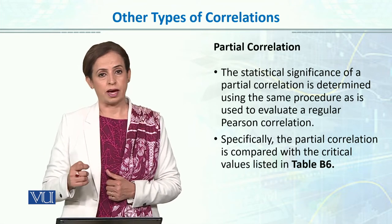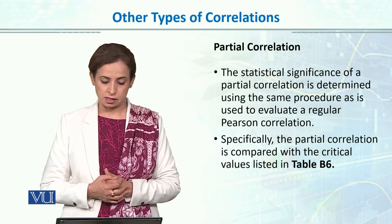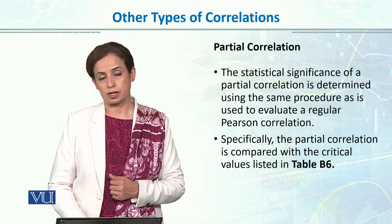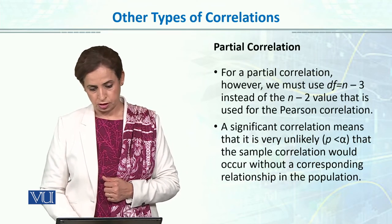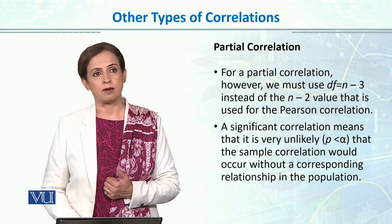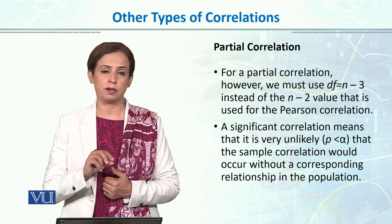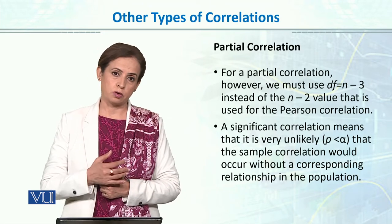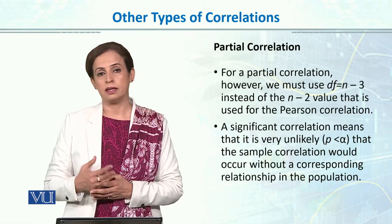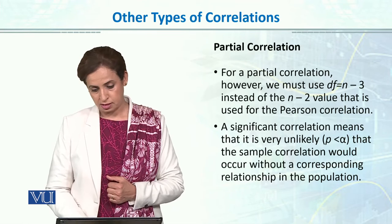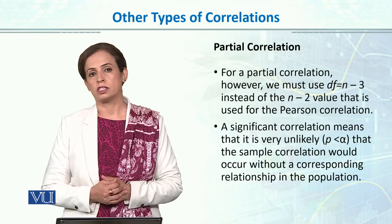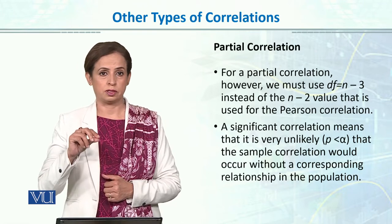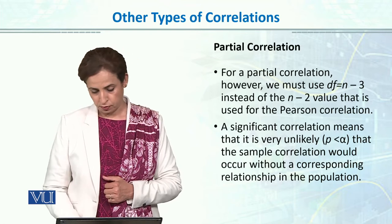If our p-value is smaller than the table value, then we say the result is significant. We use the same table — table B6 in the textbook — that we use for Pearson product-moment correlation. For Pearson correlation with two variables, the degrees of freedom is n-2, but in partial correlation, because we have a third variable, we calculate the degrees of freedom as n-3. A significant correlation means your two variables are significantly related after partialing out the effect of the third variable.